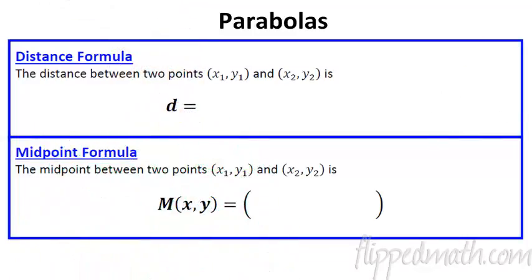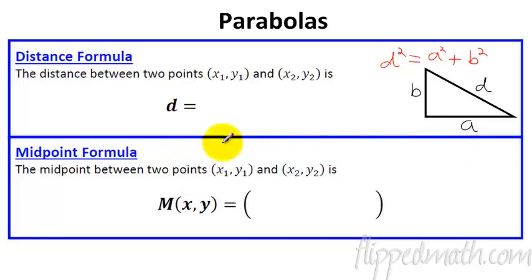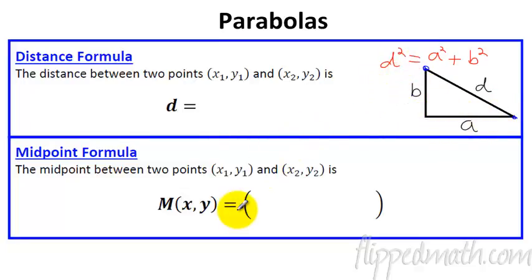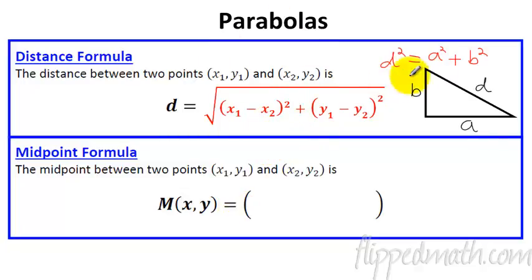The first thing we need to talk about in this lesson is the distance formula and midpoint formula, going back to our days in geometry. Now the distance formula might seem a little complicated, but really it's just the Pythagorean theorem. If you have two points that we're searching for the distance between them, this distance d - if we could take the x values and the y values and use the Pythagorean theorem and solve for d, you would get the distance formula.